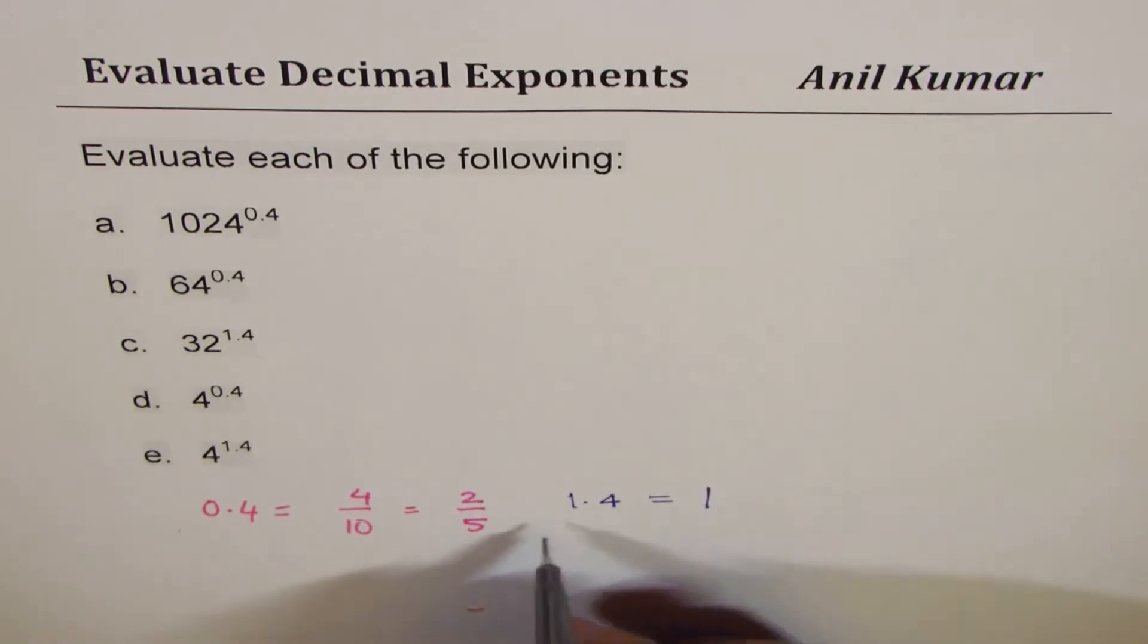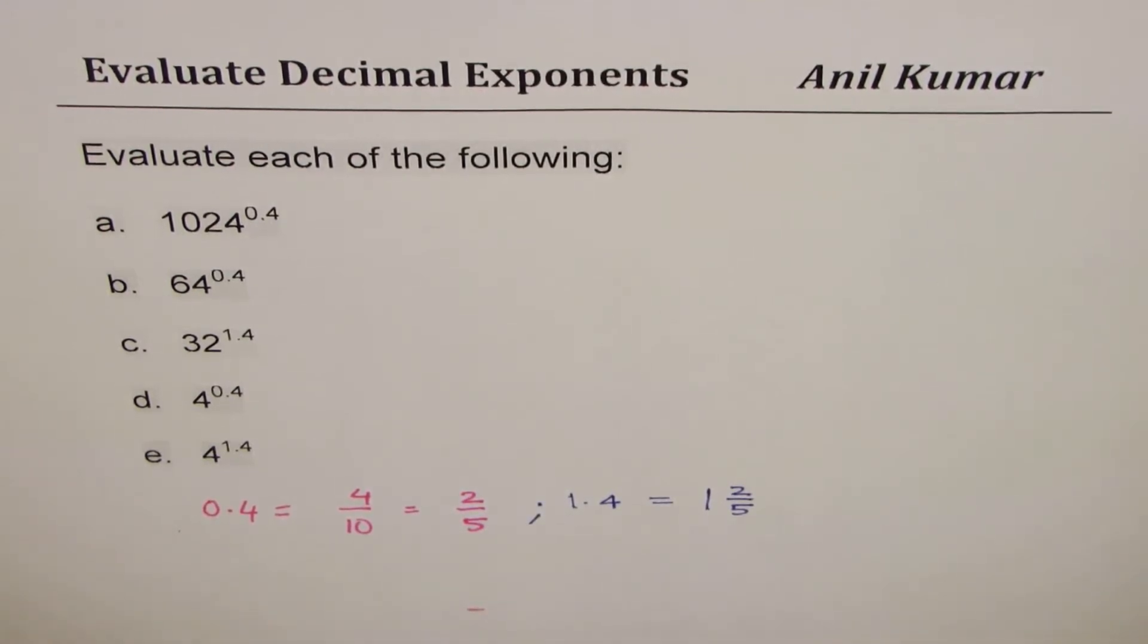it really means 1 as a whole and then 2 over 5, correct? Okay, so that is one part.